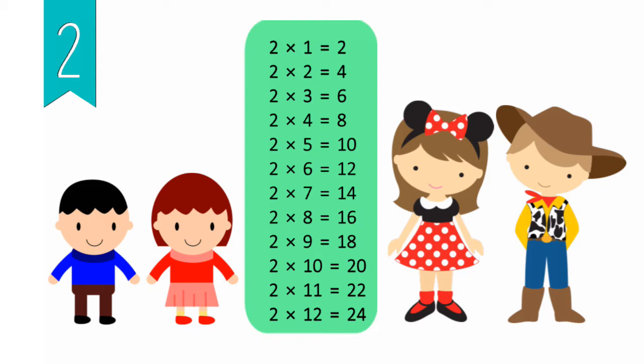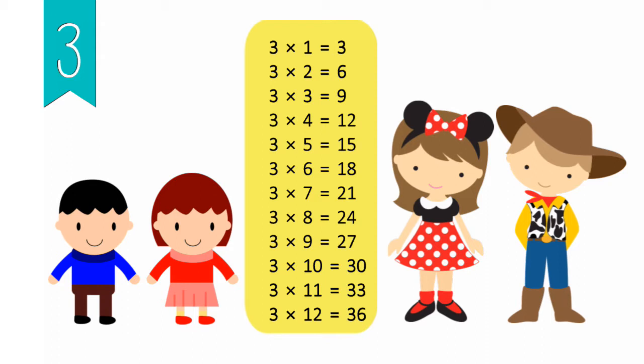3 x 1 equals 3, 3 x 2 equals 6, 3 x 3 equals 9, 3 x 4 equals 12, 3 x 5 equals 15, 3 x 6 equals 18, 3 x 7 equals 21, 3 x 8 equals 24, 3 x 9 equals 27, 3 x 10 equals 30, 3 x 11 equals 33, 3 x 12 equals 36.